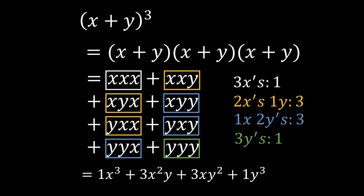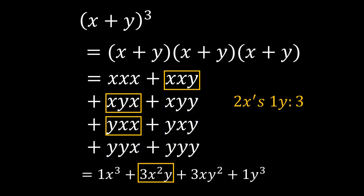The coefficient for any given term is the number of arrangements of x's and y's in that term. For example, the coefficient of x squared y comes from the number of arrangements of two x's and one y. This is just like finding the arrangements of letters in a word. So the question of finding the coefficient becomes how many arrangements of x's and y's are there in that term. So is there an easier way to count the number of arrangements? Well, there is, and that is by using combinations.